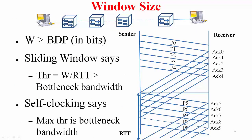Here is a paradox: if W is set greater than the bandwidth-delay product — which can happen because your estimate may exceed it — the sliding window formula W/RTT implies throughput exceeding the bottleneck bandwidth. But self-clocking says you can only send packets in response to ACKs, which capture the bottleneck transmission time, so the maximum achievable throughput is the bottleneck bandwidth. These two statements contradict each other; the hint lies in the round trip time.